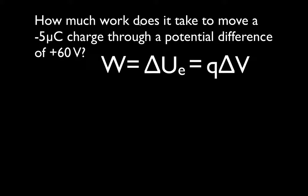The equation says that the change in potential energy, or the amount of work you do, is equal to Q — the amount of charge that you're going to be moving — times the potential difference through which that charge is moved. So you can see it's just Q times delta V. This small Q is the charge you're going to move, and this delta V is the potential through which that charge is moved.